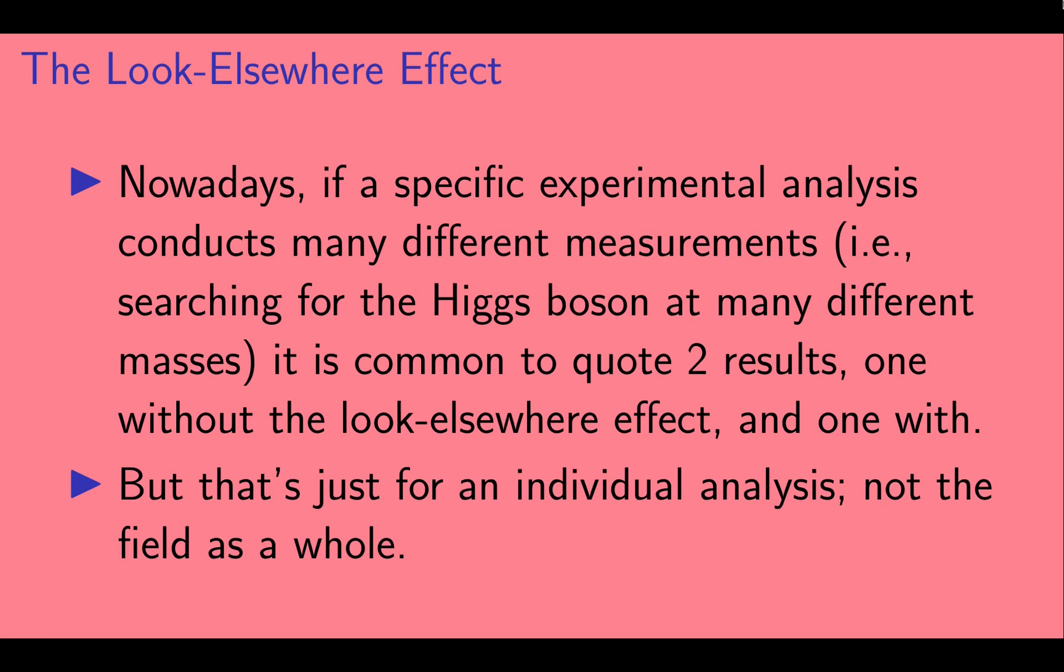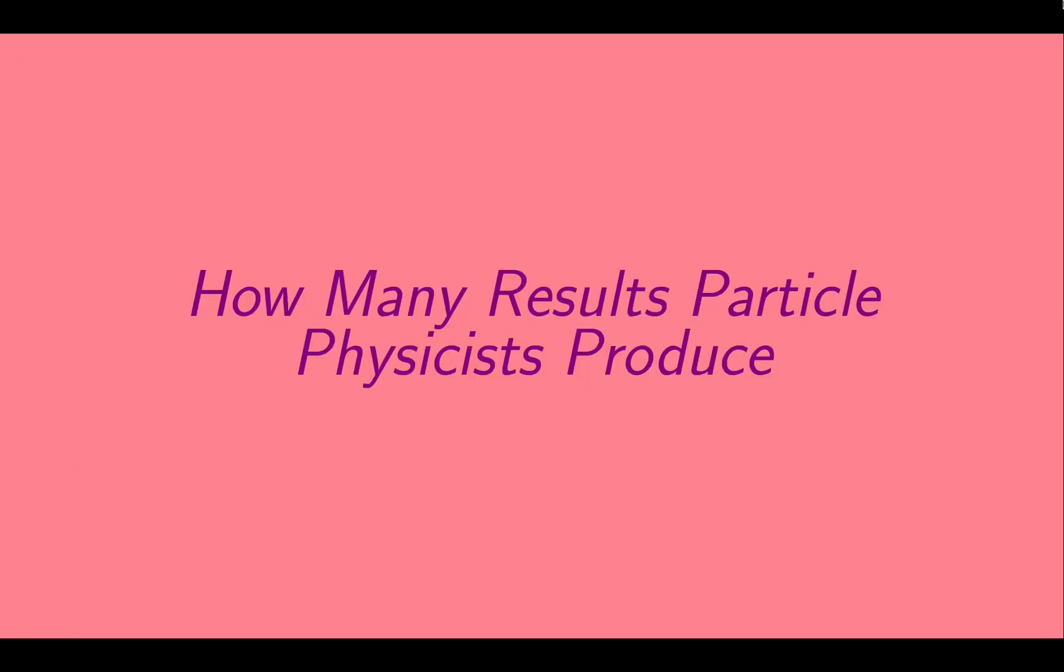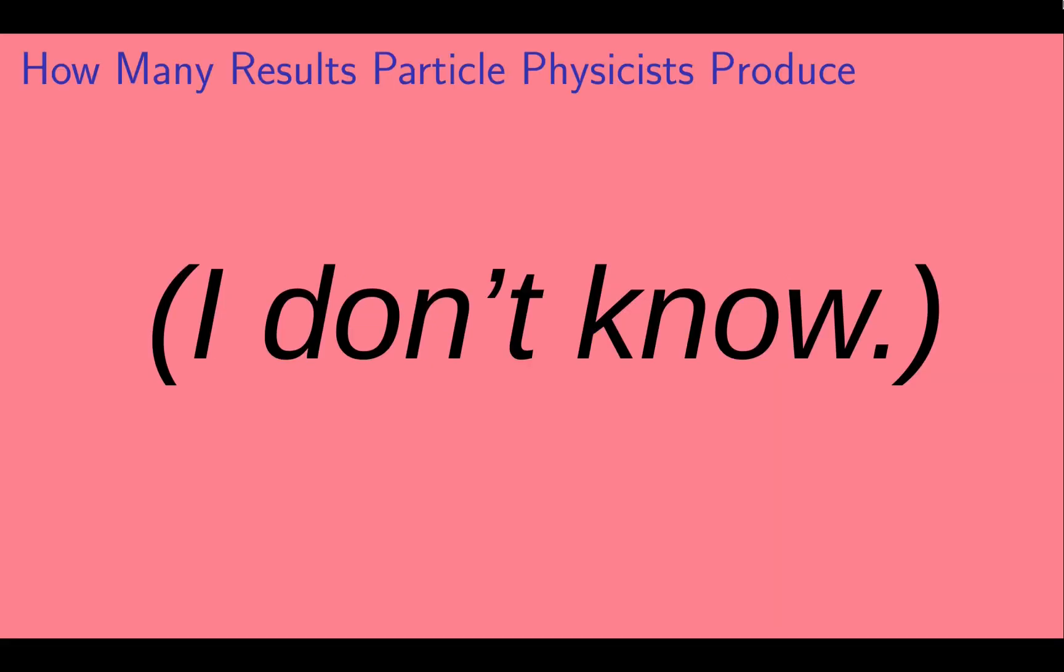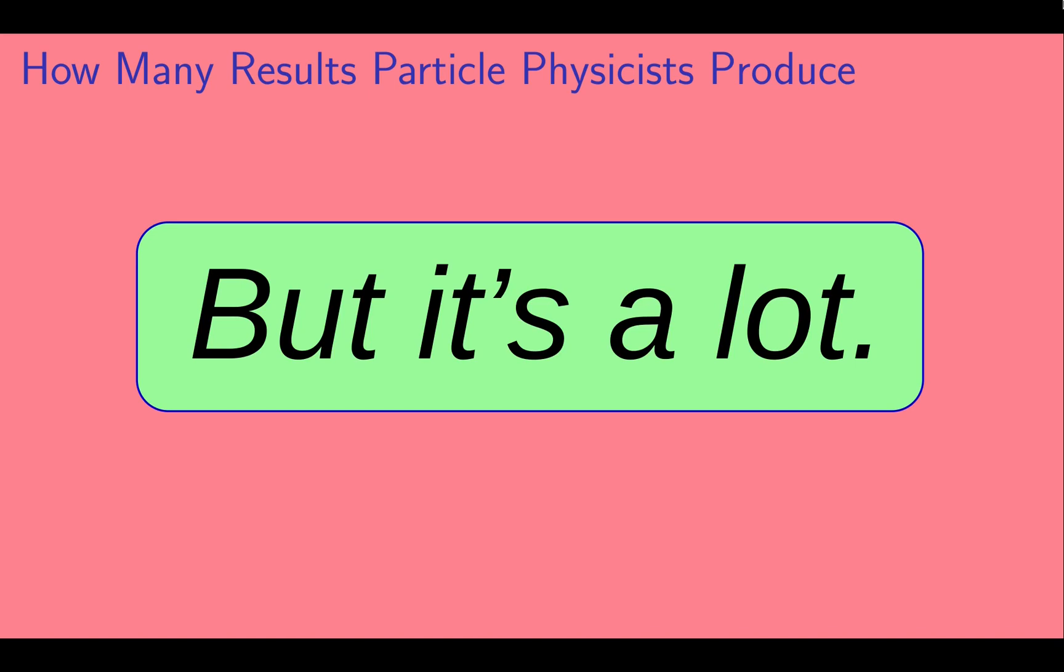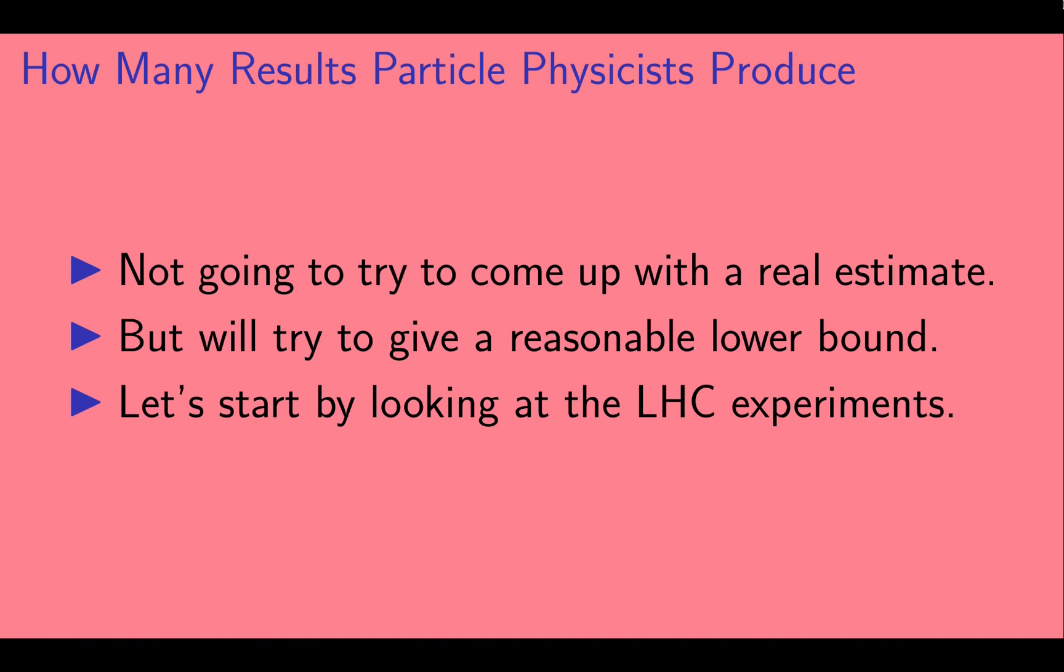These days, if a specific experimental analysis conducts many different measurements, for example, searching for the Higgs boson at many different masses, it is common to quote two results. One without taking the Look Elsewhere effect into account, and one with it. But that's just for an individual analysis, not the field as a whole. So now it's time to ask, how many results particle physicists produce, say, in a year? I don't know the answer to this, but it's a lot. I'm not going to try to come up with a real estimate. Instead, I'll try to give a reasonable lower bound on the number of experimental results in a year. Let's start by looking at the LHC experiments.